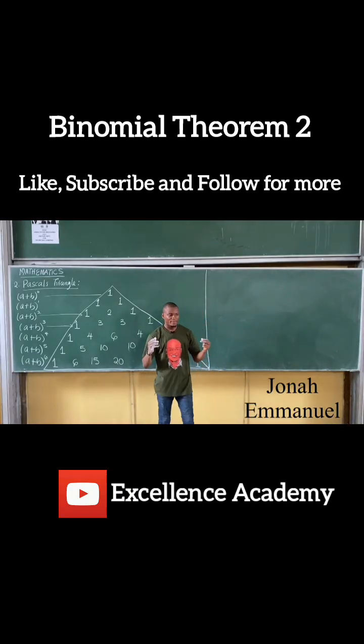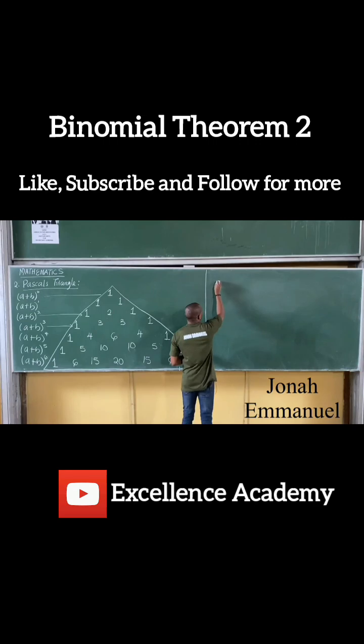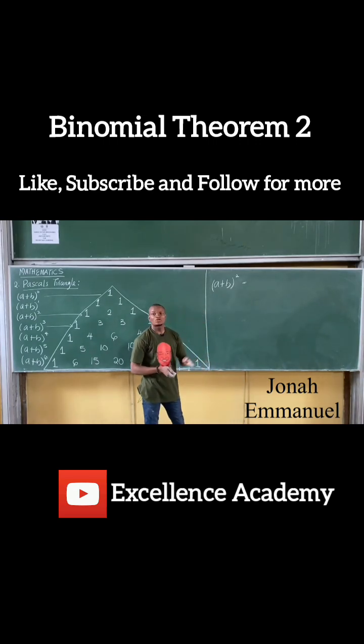Alright, so let's look at a fast method of getting expansion without going to the whole complex method. Now let me start with what we did earlier. We said we had a plus b squared. Let's say I was to expand it using Pascal's coefficient or Pascal's triangle without going to the lengthy process. What do I do?